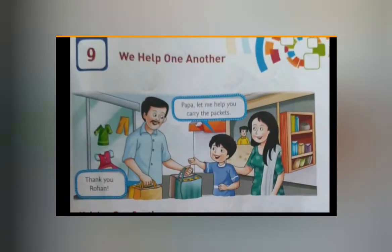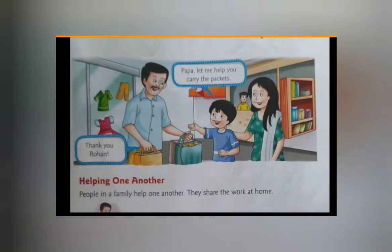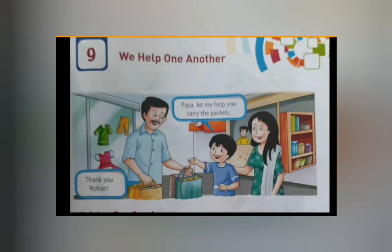I already explained you in the 8th chapter what is family. In the 8th chapter you learned about different types of family — small family, big family, and joint family. In this 9th chapter, you will learn how family members help each other and share their responsibilities.